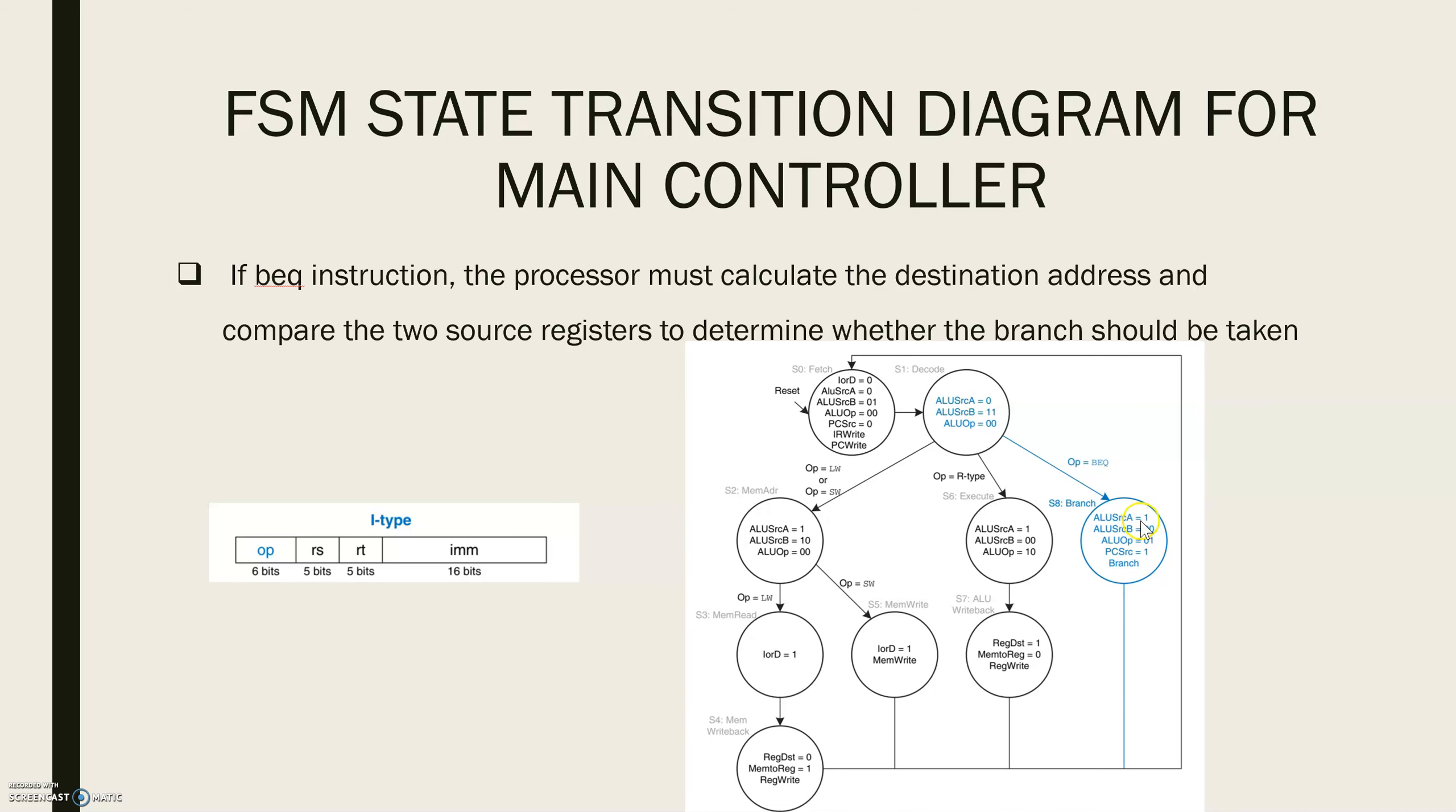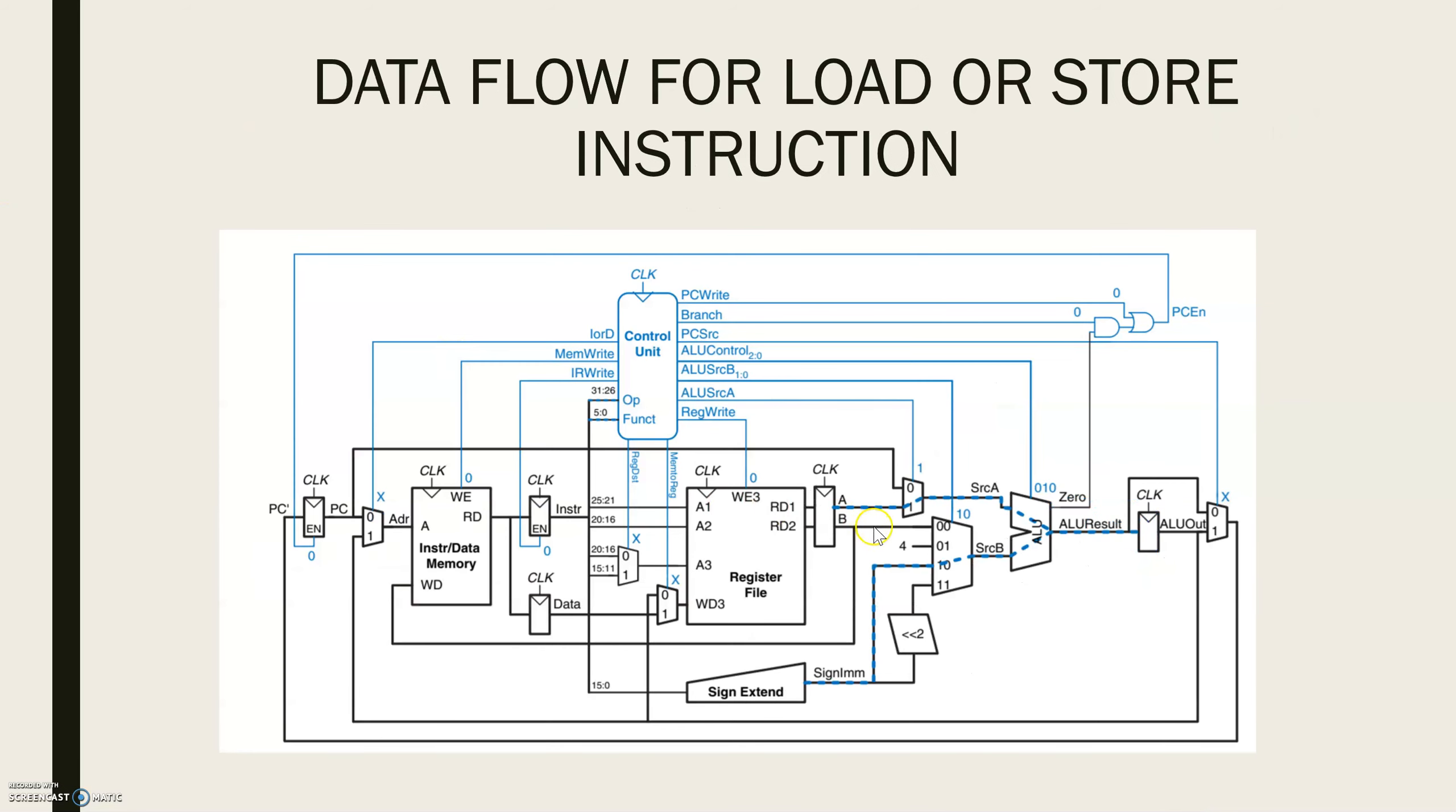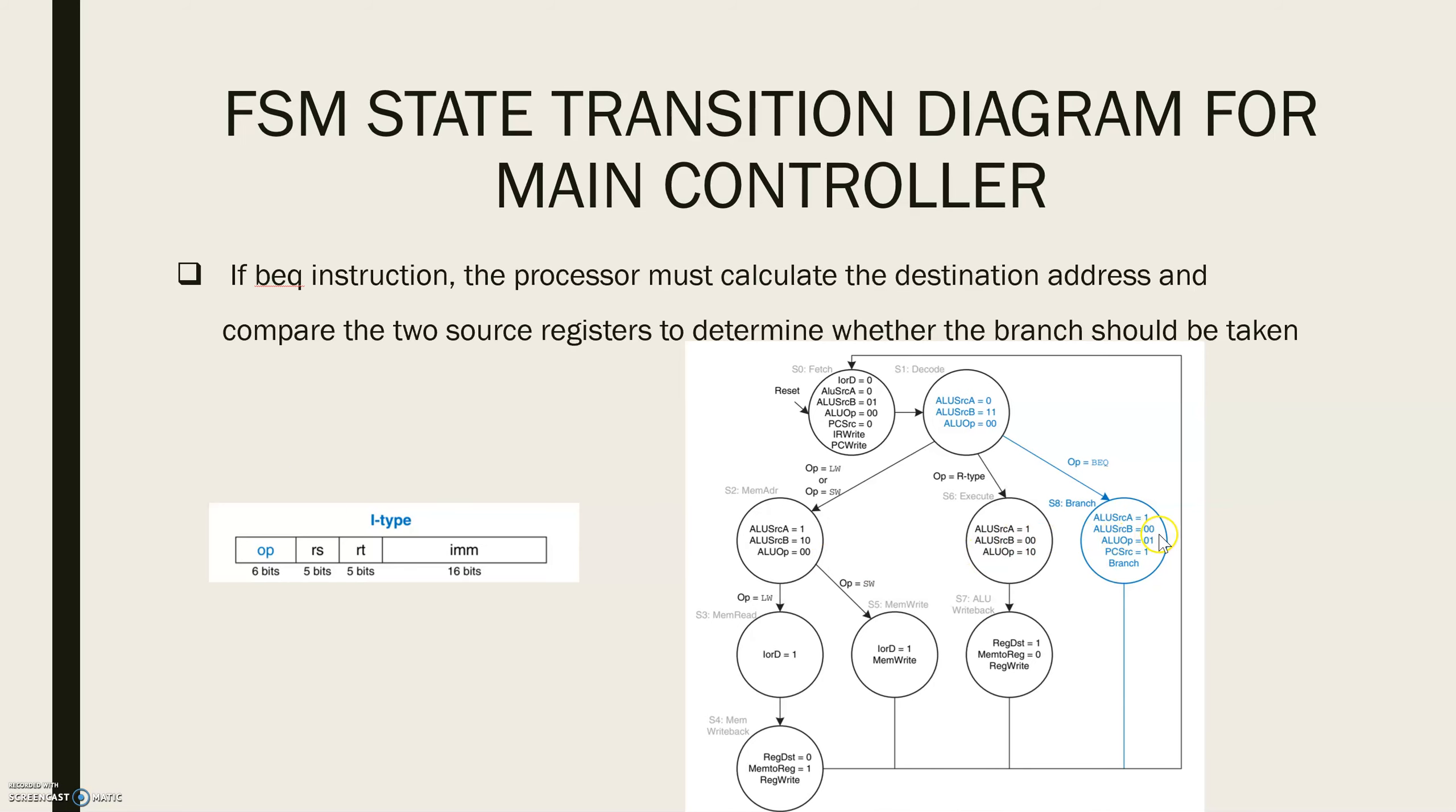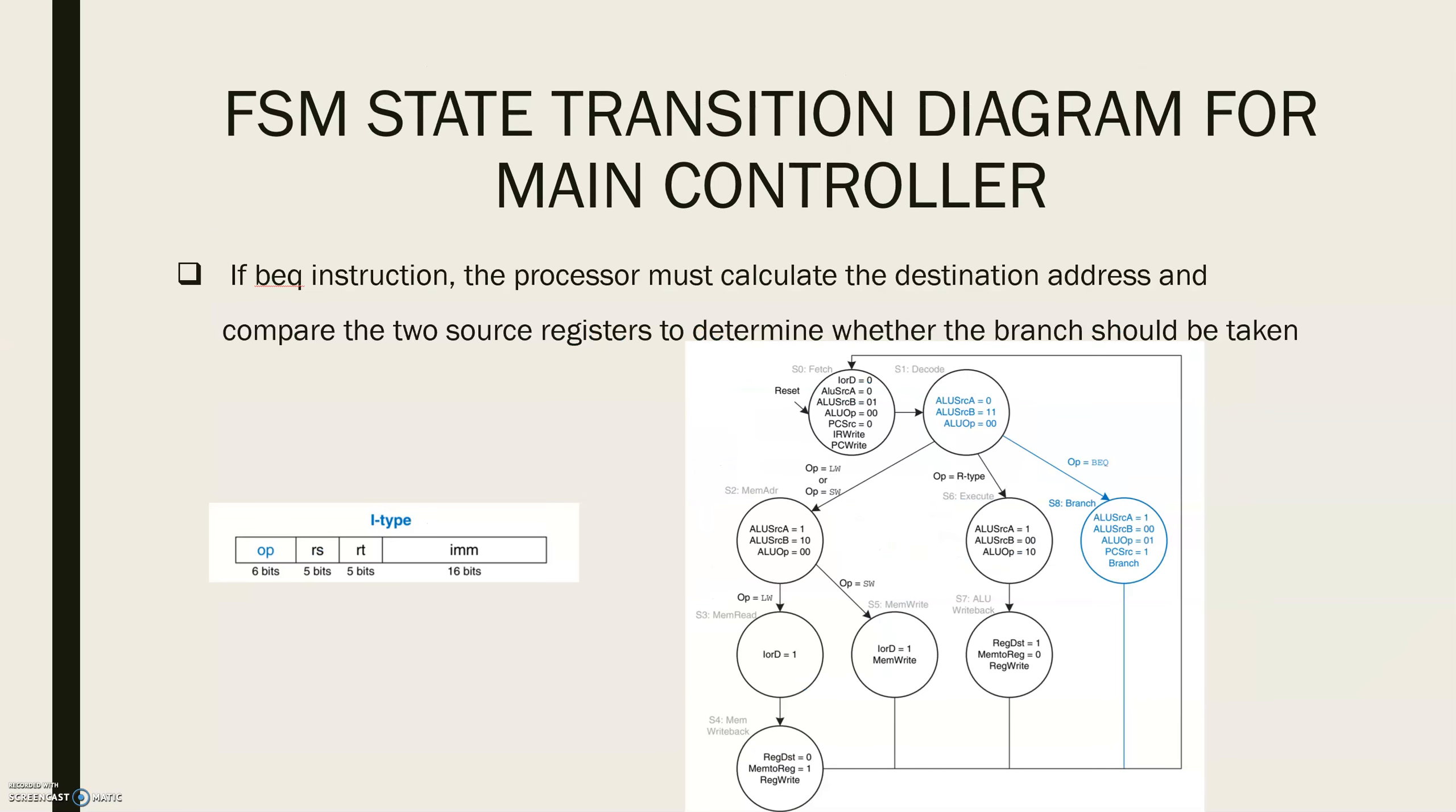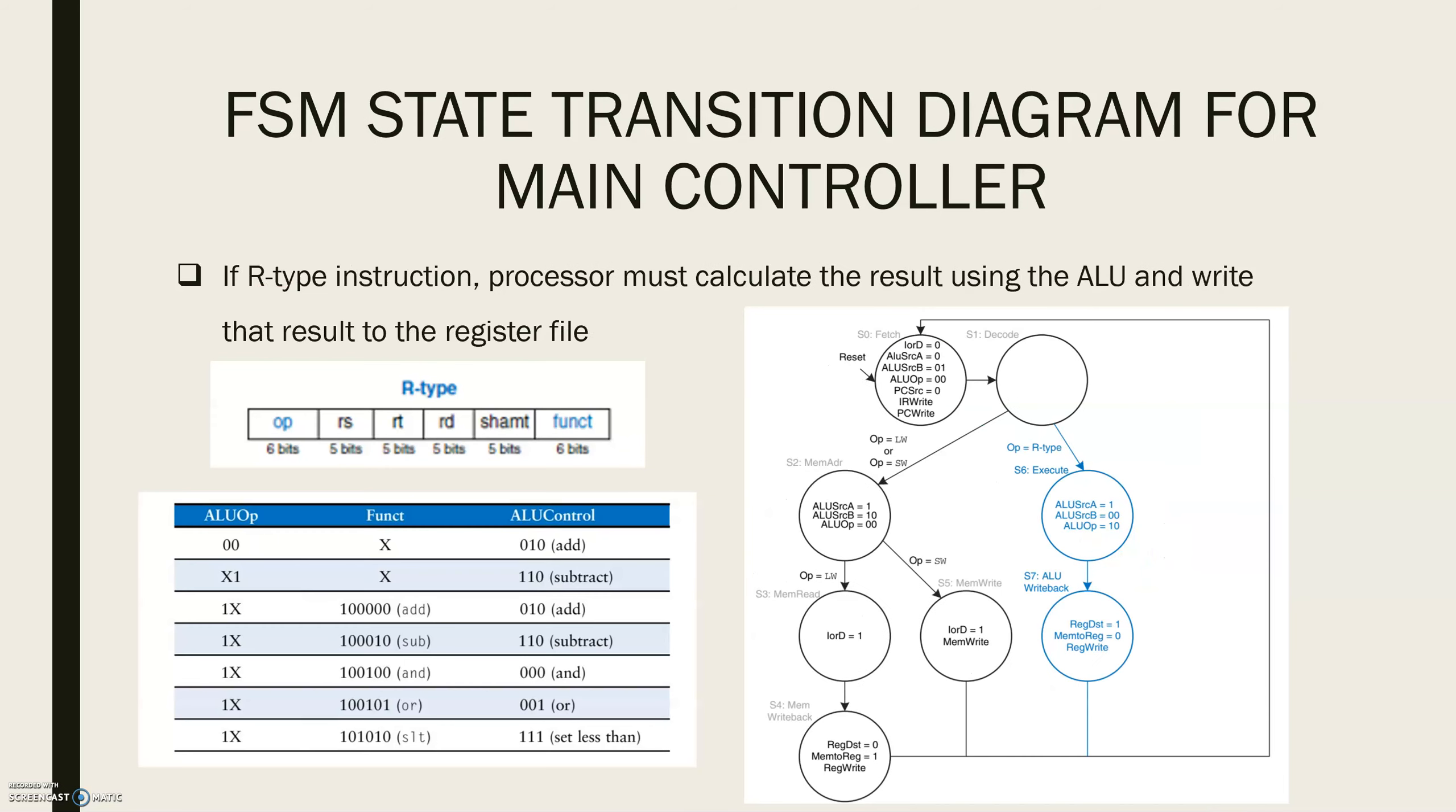ALU SRC A is 1 to select register A. ALU SRC B is 00 to select register B. ALU OP is 01 for subtraction.